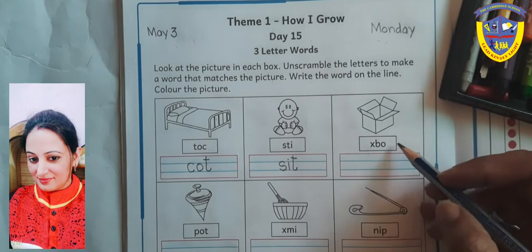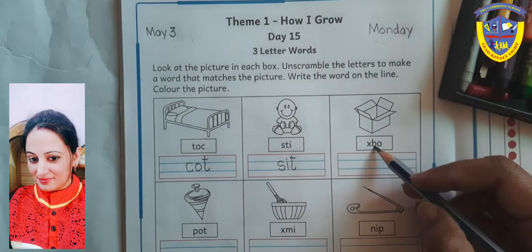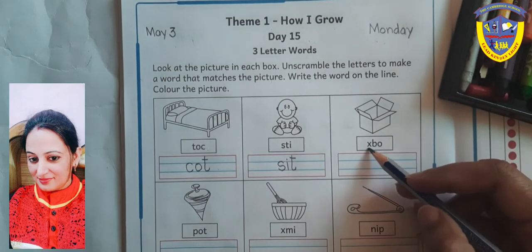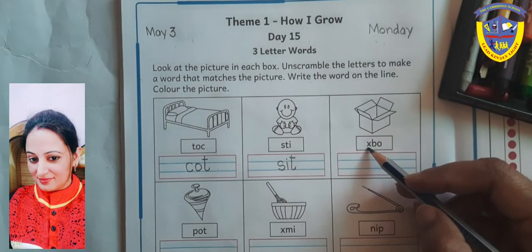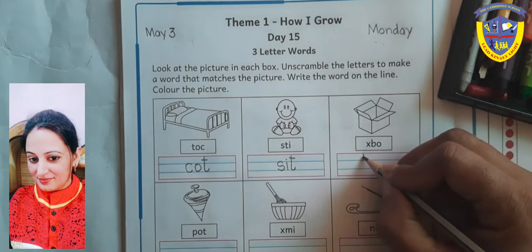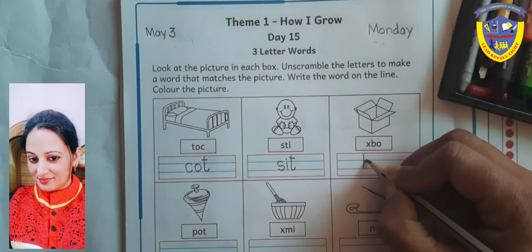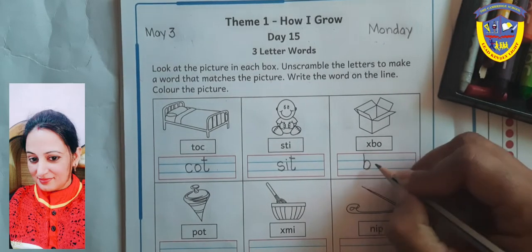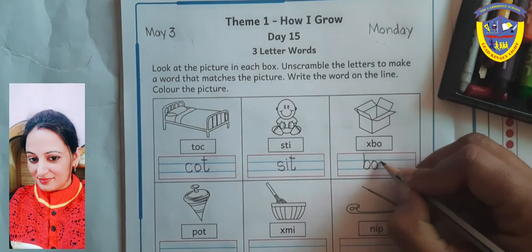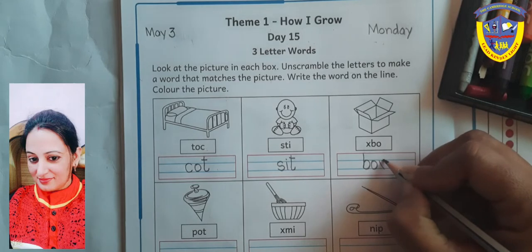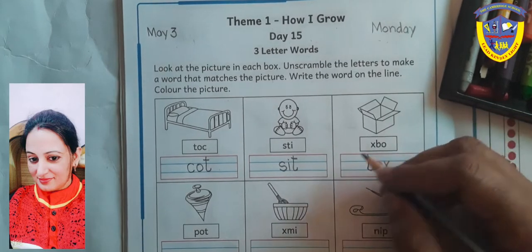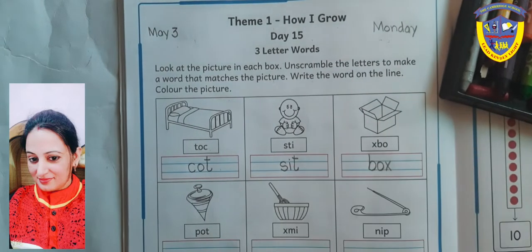Look at the next picture. Box — B, O, X. Right here: B, O, X. Box. Now we will do color.